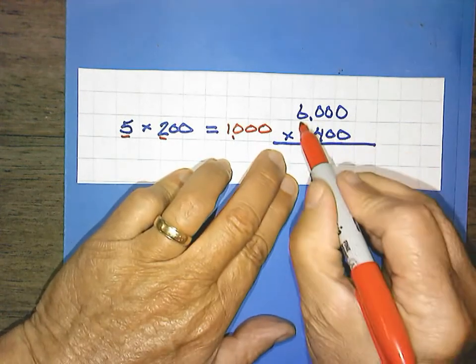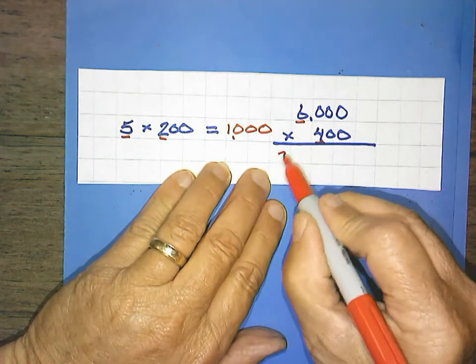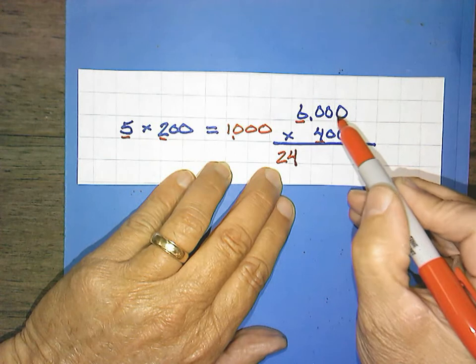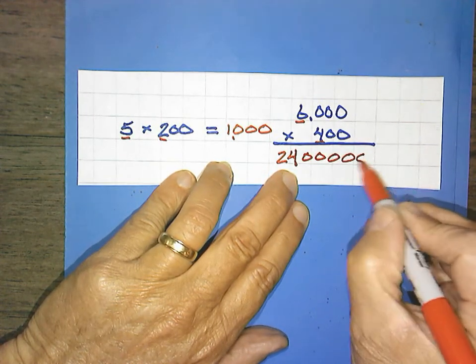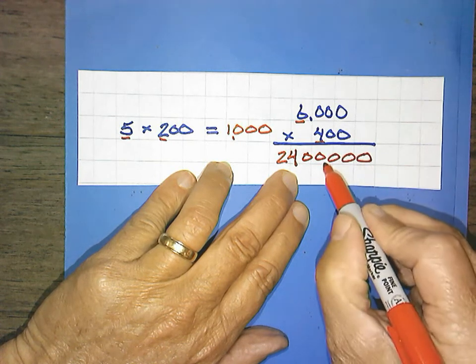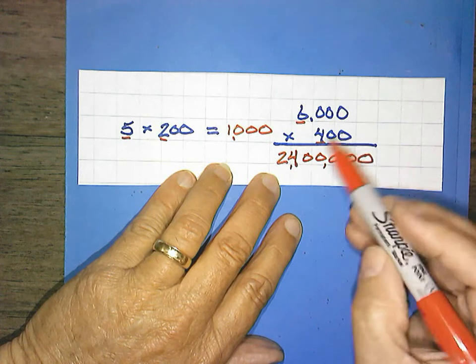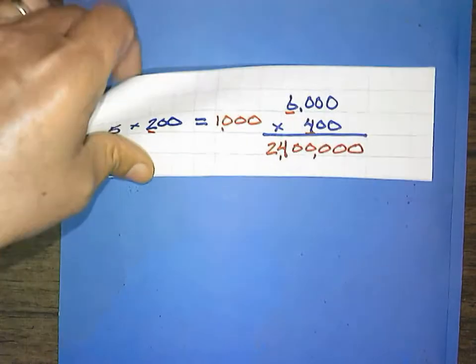6,000 times 400. Let's do your solids. 6 times 4 is 24. Count your zeros. A lot of them. 1, 2, 3, 4, 5. 1, 2, 3, 4, 5. And remember, every 3, we're going to put in our comma. So 6,000 times 400 equals 2,400,000. And finally,